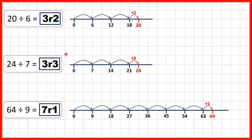So rather than counting on a number line, the way to solve these mentally is to think: what's the closest number in the divisor's times table to the dividend, which is still less than the dividend? So for the first question, we could think: what's the closest number to 20 in the 6 times table that's still less than 20? That's 18, and 3 times 6 is 18, so we know 3 will be before the remainder. But 3 times 6 is 18 and we were dividing 20, so from 18 we need 2 more to get to 20 — that's why our remainder is 2.